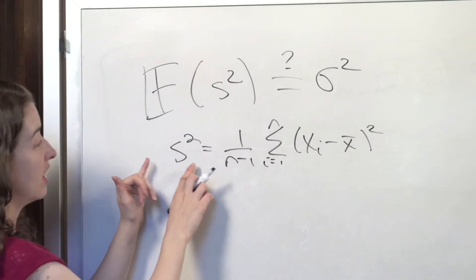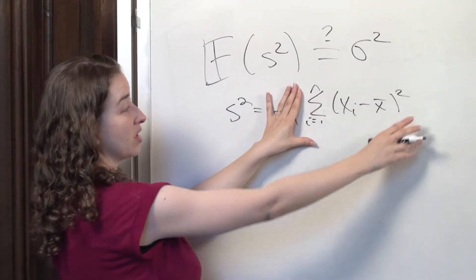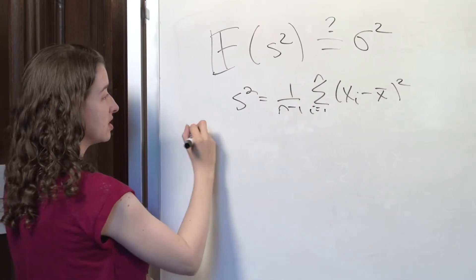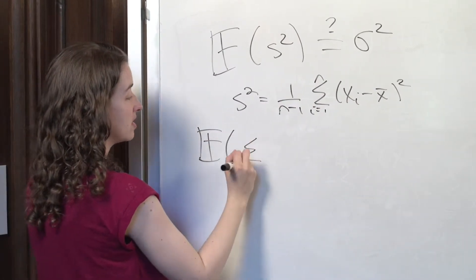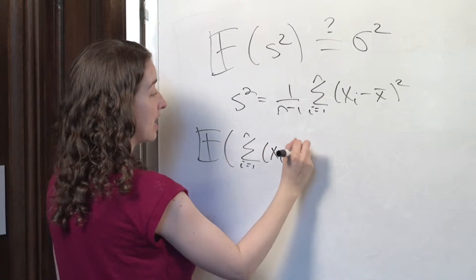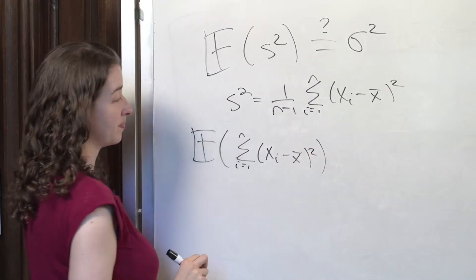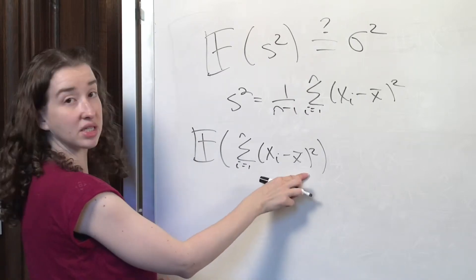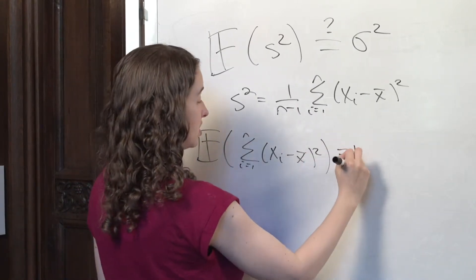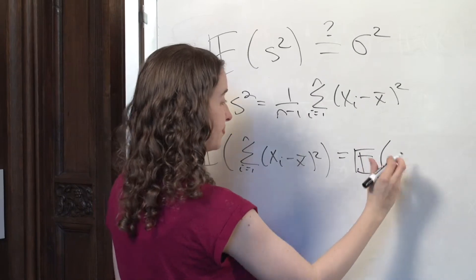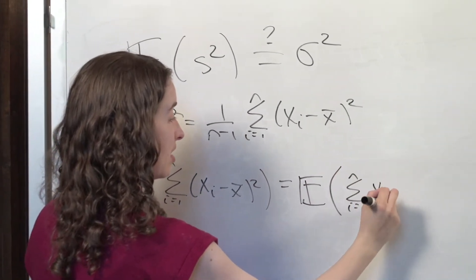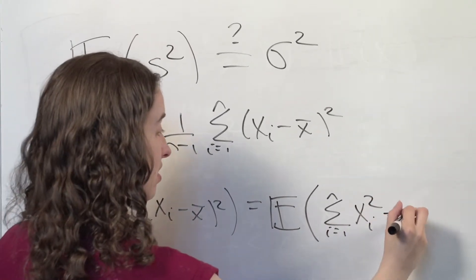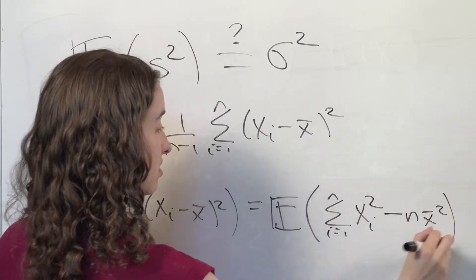The expected value of s squared is equal to 1 over m-1 times the expected value of this summation — and this is certainly the tricky part. So we'll start with the expected value of the sum over all values in the sample of (xᵢ minus x-bar) squared. The first thing we're going to do is rewrite this quantity inside the expectation using the trick we derived, rewriting it as the sum of xᵢ squared minus n times x-bar squared.